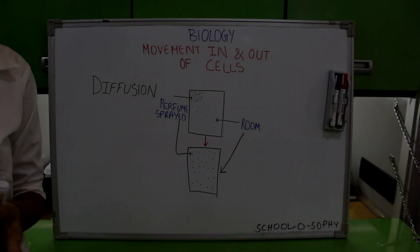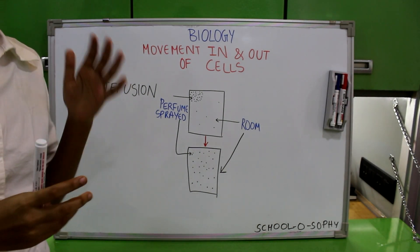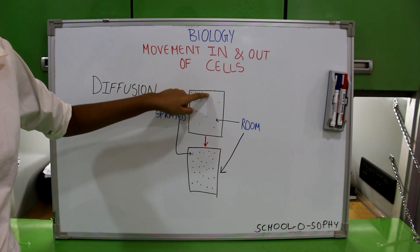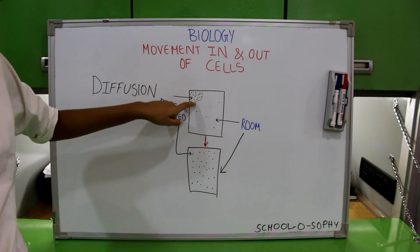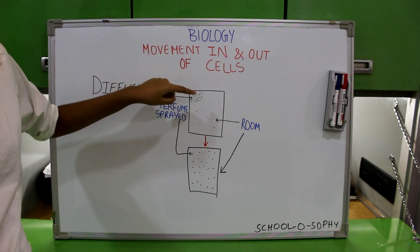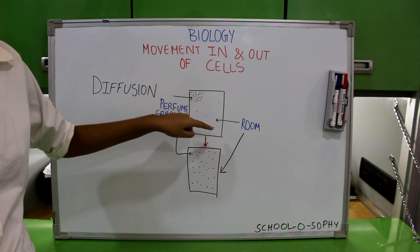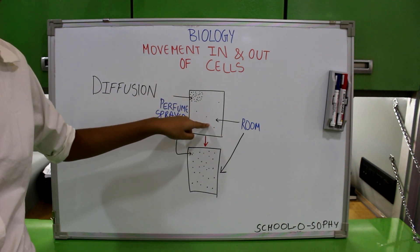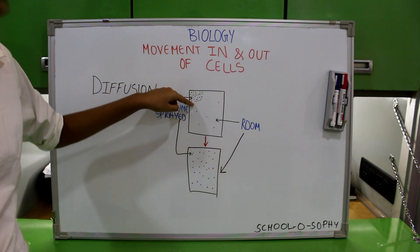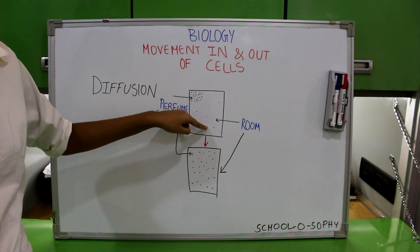Concentration is the number of particles in a unit area. Higher concentration means more number of particles. Like in this corner of the room, there are more number of particles, so there is higher concentration here. While the rest of the room has fewer particles, which means there is low concentration there. Diffusion occurs from an area of higher concentration to an area of lower concentration because the particles want to be equally spread.